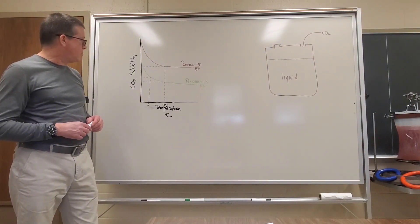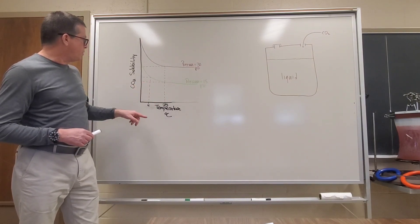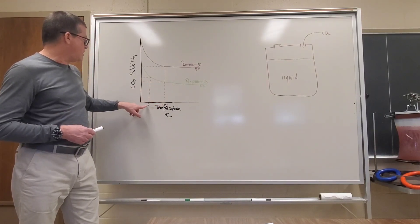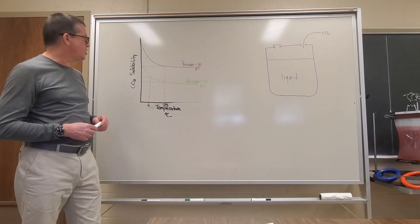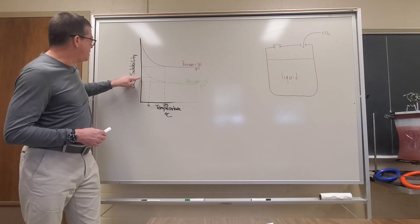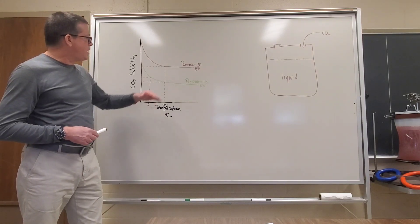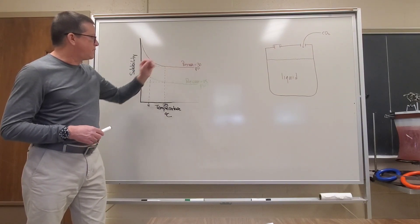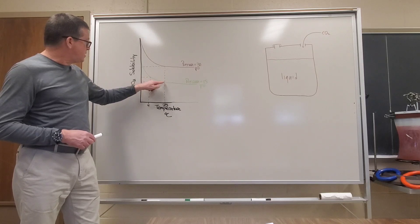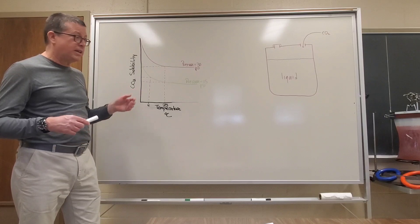Now let's take a look at the temperature dependence. If we look at this 15 psi curve, the green curve, we'll notice that if we decrease the temperature from 25 degrees Celsius - basically room temperature - down to 4 degrees Celsius, which is refrigeration temperature, we also get an increase in the solubility of the carbon dioxide in the beverage, though to a lesser extent.